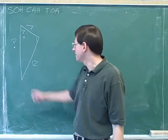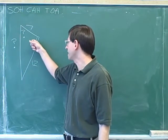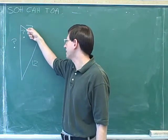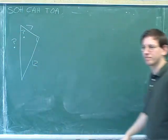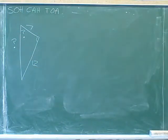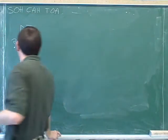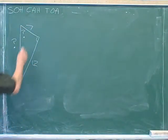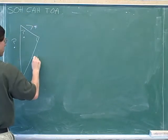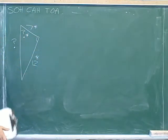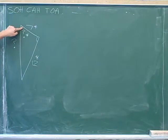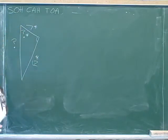Here's our next problem. This side has a length of 12, here's a right angle, and this side has a length of 7. Figure out this angle and this side. We can use asterisks to indicate the sides that we were given, and also use an asterisk to remind ourselves that we're focusing on the angle we want to find.